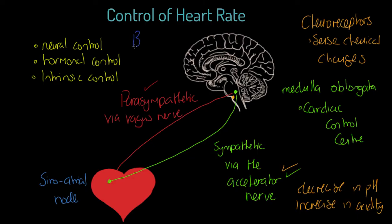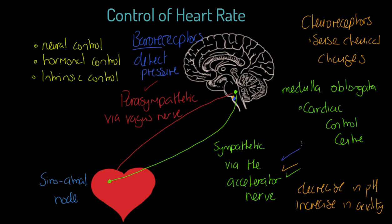We also have baroreceptors. Now these baroreceptors — you probably know from the prefix 'baro', meaning pressure — they detect pressure, and specifically they detect blood pressure. The central baroreceptors are also just here in the brain, and they inform the medulla oblongata that blood pressure has gone up or blood pressure has gone down. If blood pressure has gone up, we get sympathetic stimulation; if blood pressure has gone down, we get parasympathetic stimulation. So these receptor systems in a neural connection to the medulla inform it to sympathetically or parasympathetically stimulate the heart.